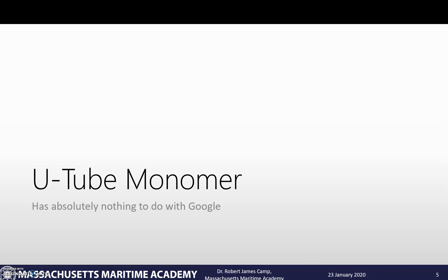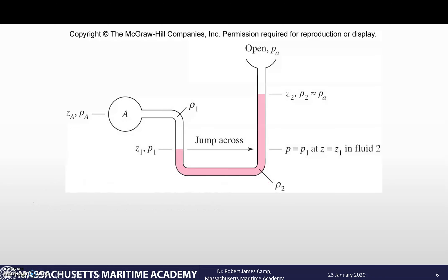Now we're going to look at how to use manometry to do pressure differences and not just atmospheric pressure. This is what's called a U-tube manometer — it's called that because it looks like a big U. The way we read a pressure difference in two fluids is pretty much the exact same way we did with barometers, except now instead of an open end, we can have any number of different fluids and different bends. I'm going to show you how to calculate a U-tube manometer, and there are really no set formulas — I'll show you how to create the formula because all U-tube manometers can be a little different.